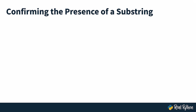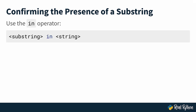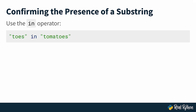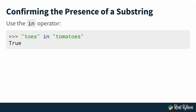Let's start by confirming the presence of a substring. In Python, the most straightforward way of doing this is by using the `in` operator. Here's the syntax: you first type the substring, then you type the `in` operator, and then you type the string where you want to check for the substring. To show that with a concrete example — you want to check whether "toes" is in "tomatoes". If you punch that into a Python REPL, you'll see that the `in` operator returns a Boolean value, either true or false. Because the substring "toes" appears inside of the string "tomatoes", you'll get true back.